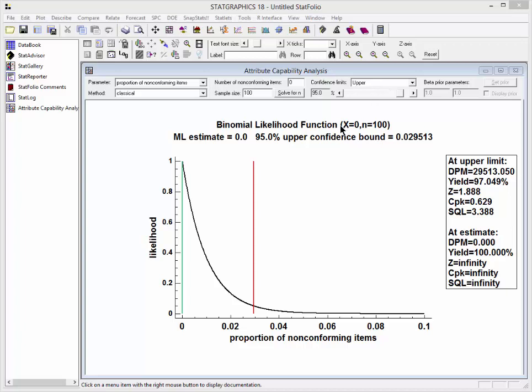The binomial likelihood function is graphed out for me here. You can see that it's maximized at 0. That's the maximum likelihood estimate. The red line is drawn at the upper 95% confidence bound for theta, which in this case is slightly less than 0.03.